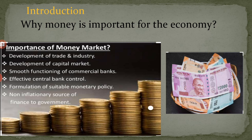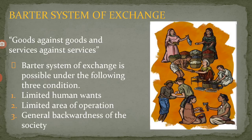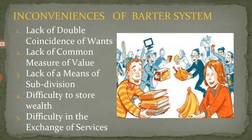First, exchange was direct — goods against goods and services against services — which is also known as the barter system of exchange. In the barter system, goods are exchanged against goods and services against services, because money did not exist. The barter system of exchange is possible under the following three conditions: first, limited human wants; second, the area of operations should also be limited; and third, general backwardness of the society. However, the barter system had certain inconveniences, and because of that, the need for money was felt.